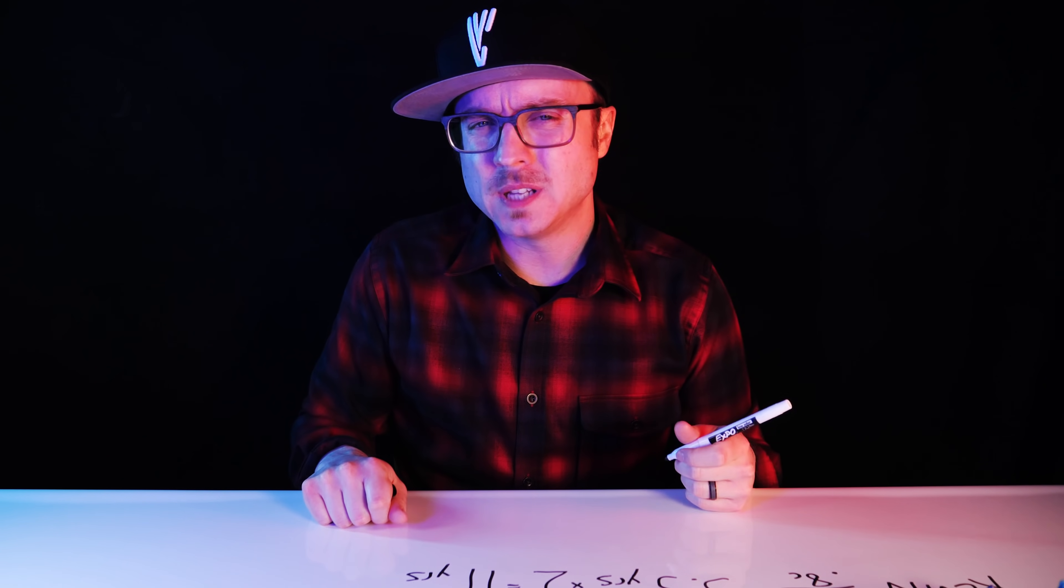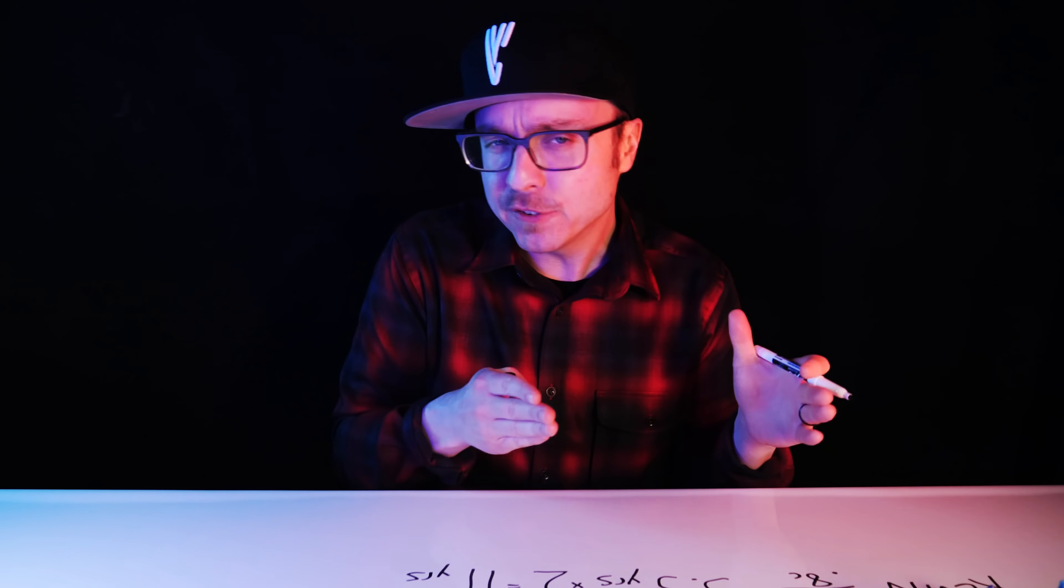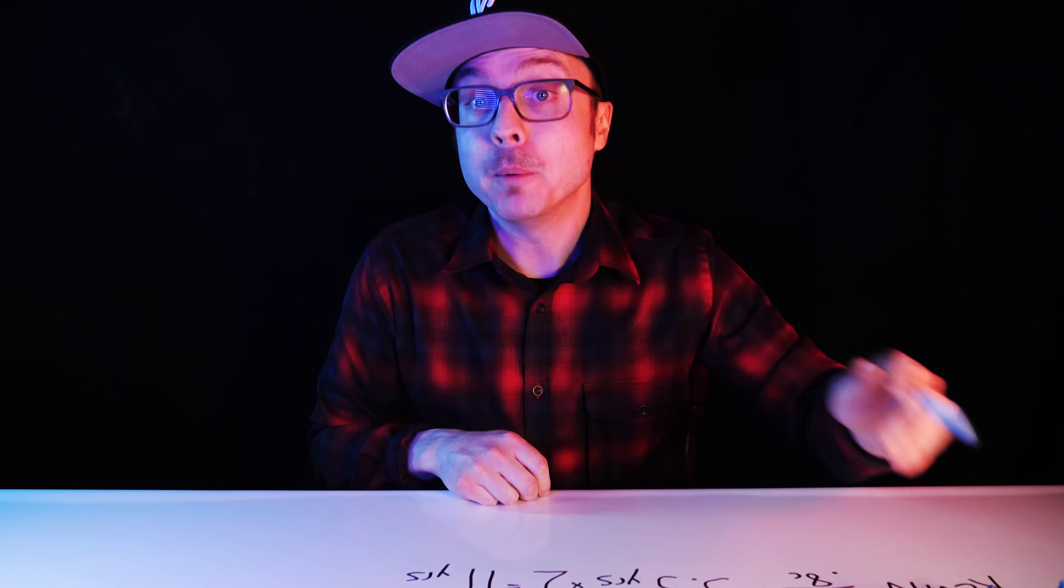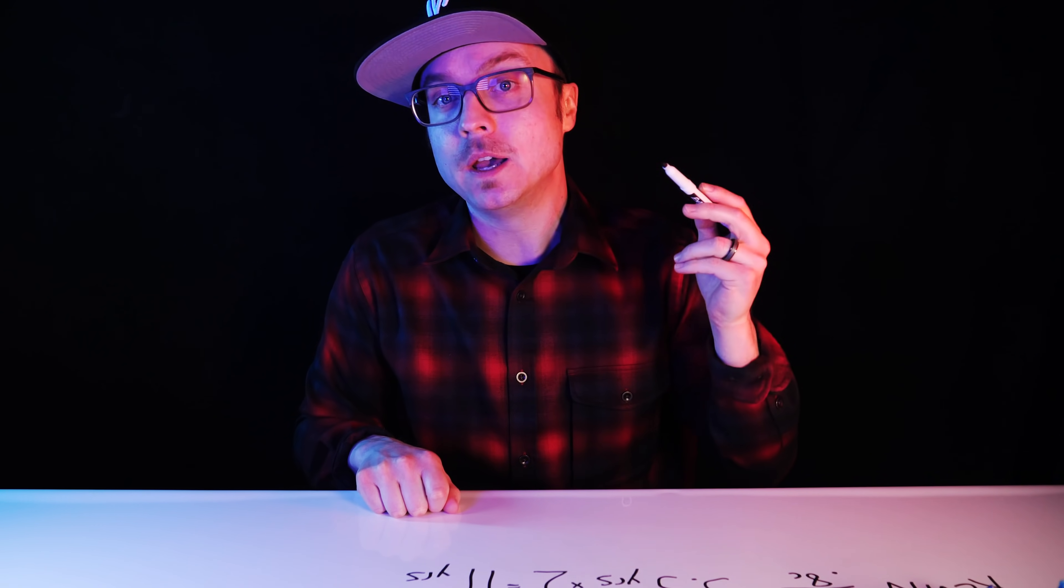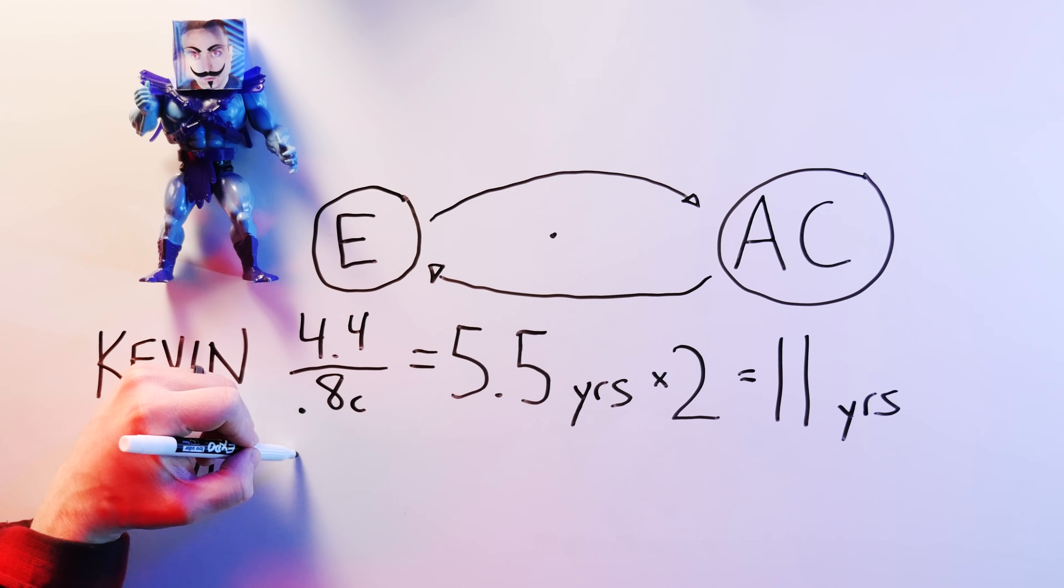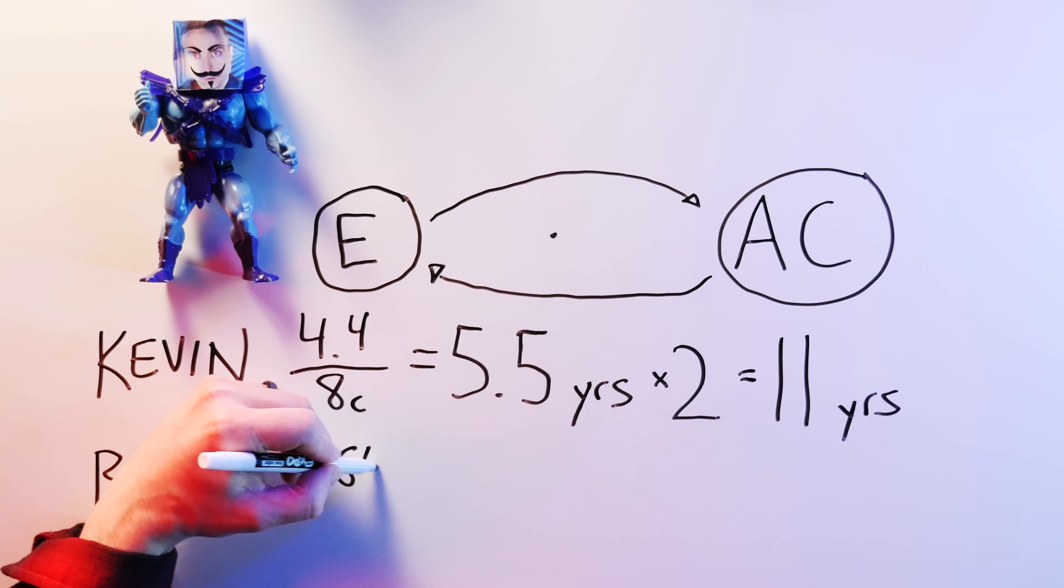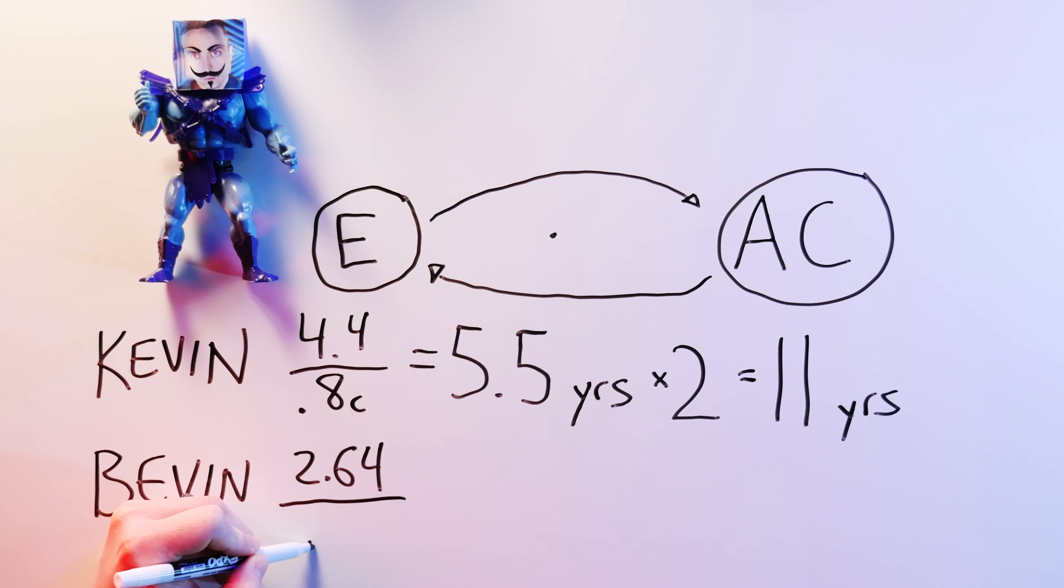Distance and also time seems to work differently for Bevan. From his point of view, traveling at 0.8 times the speed of light makes Bevan's distance contract to just 2.64 light years. Which means it takes him just 3.3 years each way.